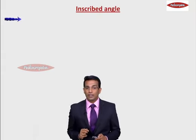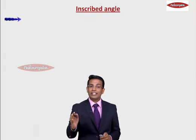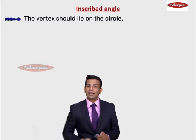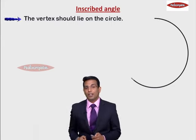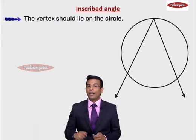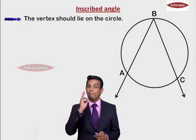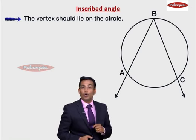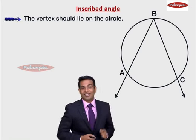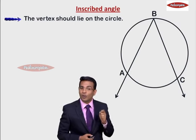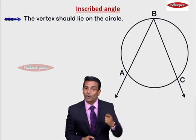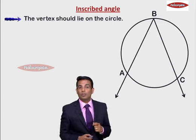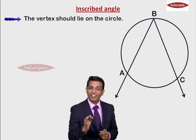There are two conditions which an angle has to satisfy so that it can be called an inscribed angle. Condition number one is the vertex of the angle should lie on the circle. If you look at the figure right now, I have got an angle. What is the name of this angle? It is angle ABC. For this angle, B is the vertex, and that vertex is on the circle. So the first condition is satisfied: vertex on the circle. B is lying on the circle.